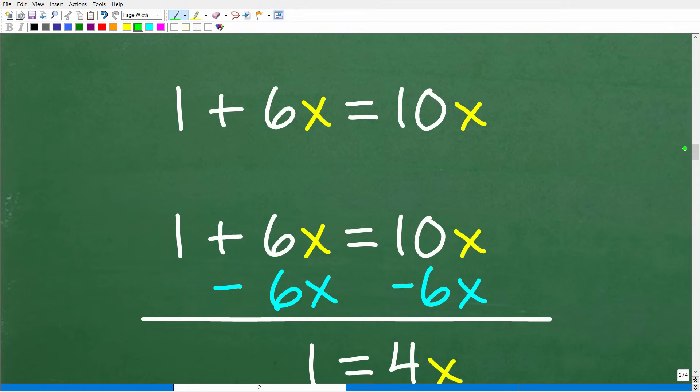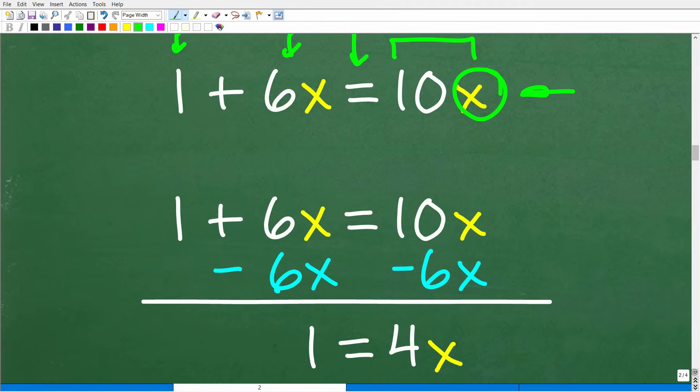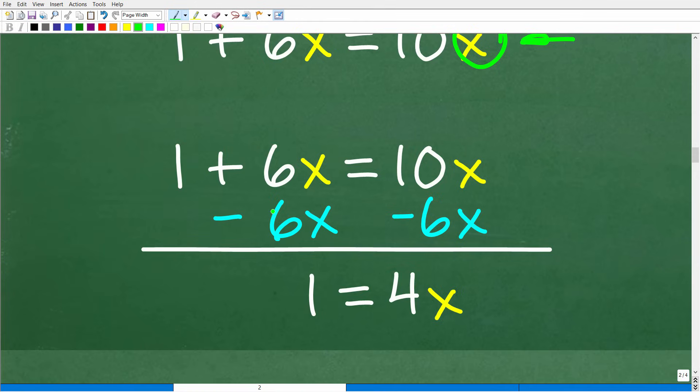Okay, so 1 plus 6x is equal to 10x. So remember, this is our model of what the problem is saying, that 10 of these coins, and x represents those coins, is the same value or is equivalent to $1 and 6 of those coins. So 1 plus 6x is equal to 10x. Let's just solve this basic algebraic equation.